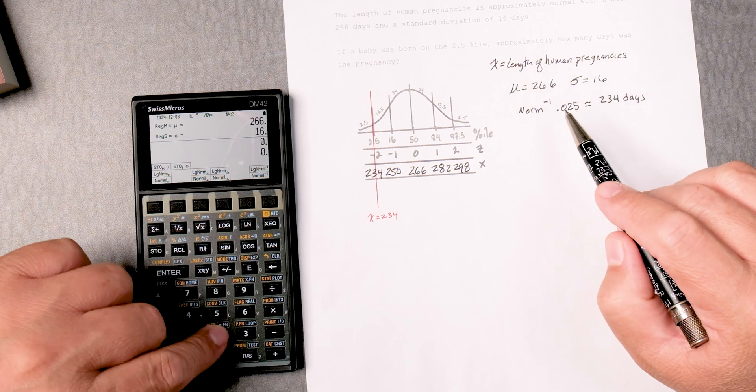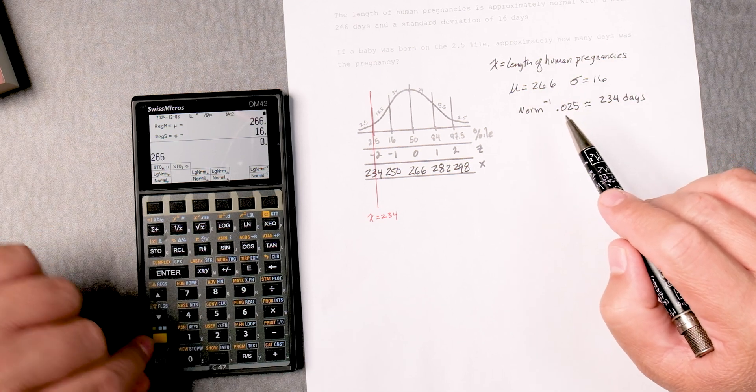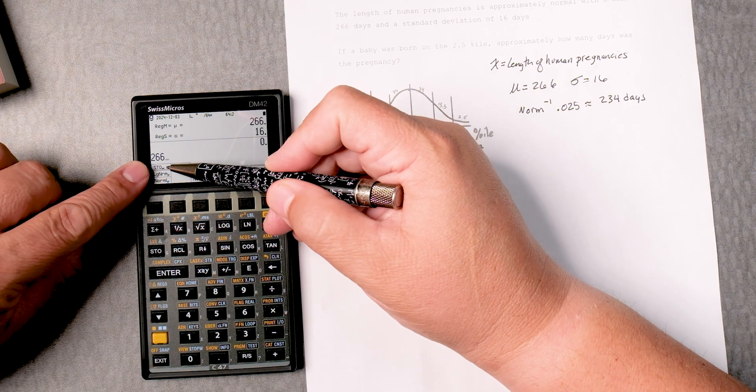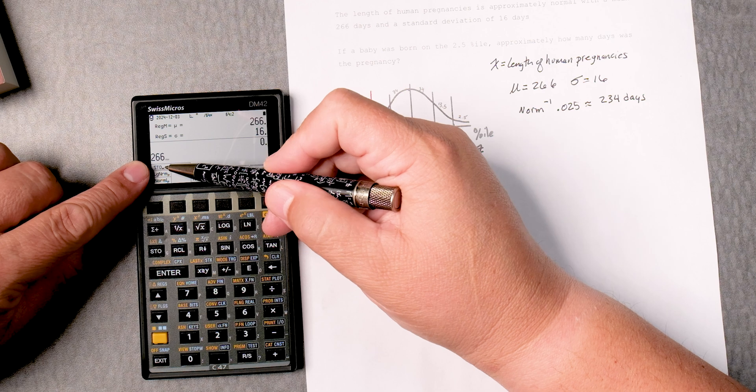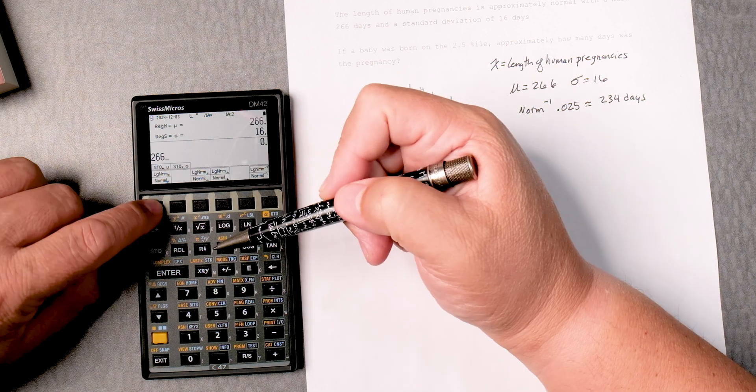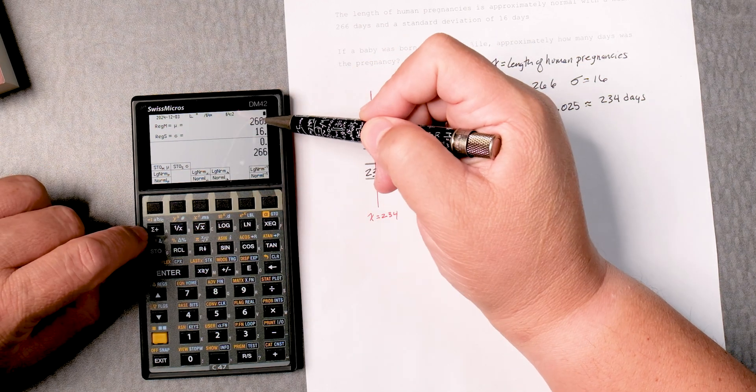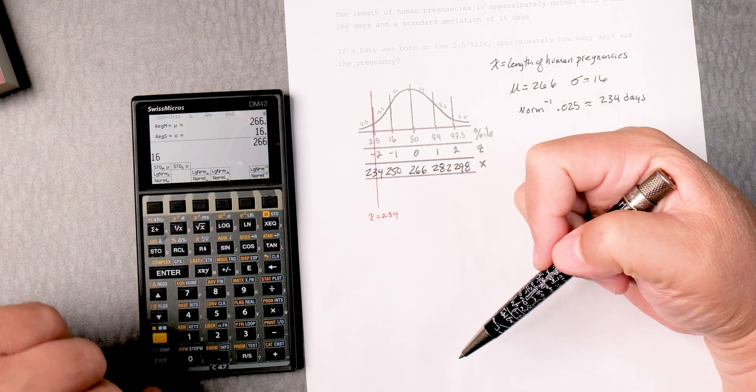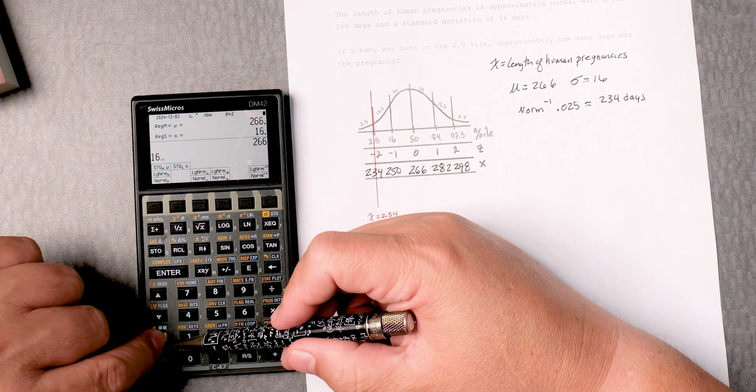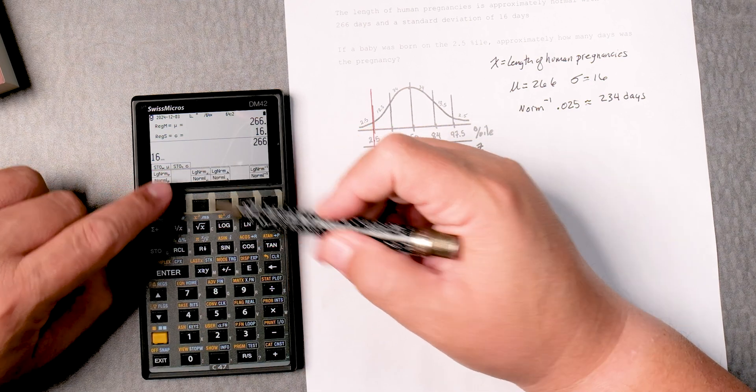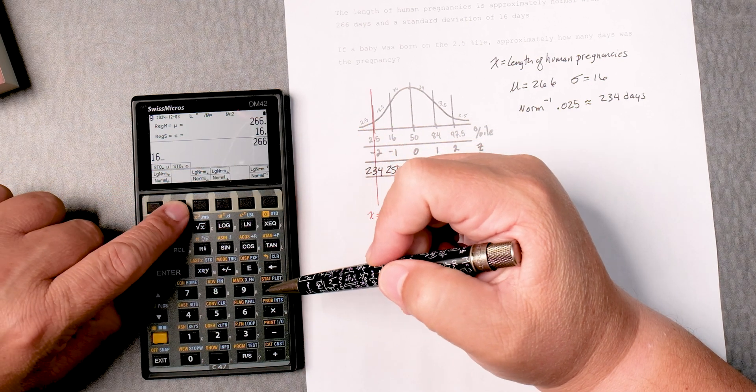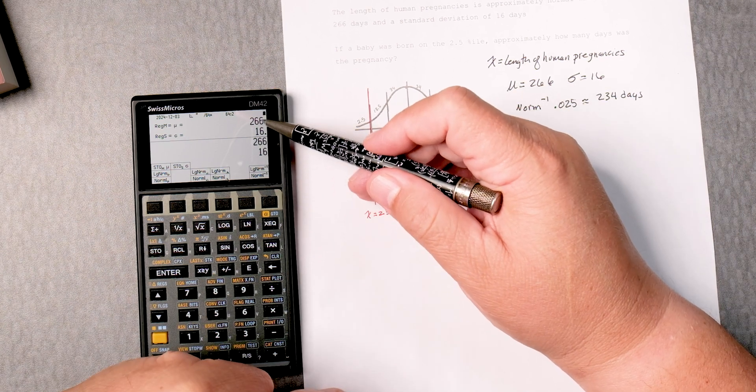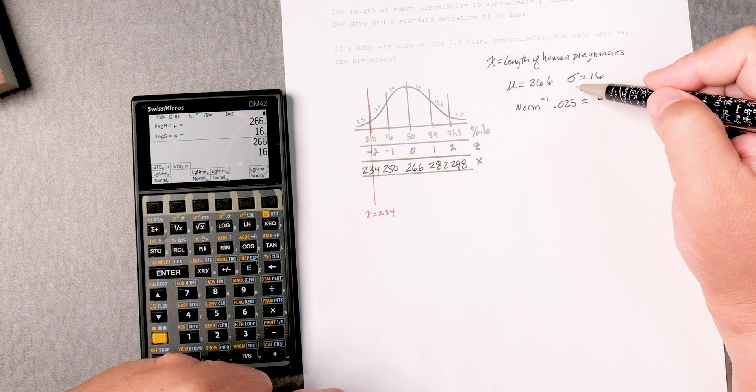To do that, we put 266, then use the yellow key twice to go where it says mu, store mu. This is the first function button. So mu is 266, and the standard deviation is 16. We press the yellow button twice to store sigma, which is the second function button. These two values are now stored in the calculator.